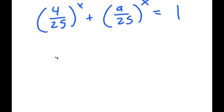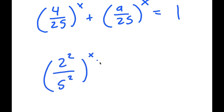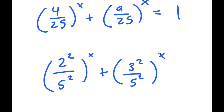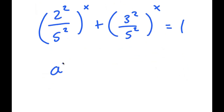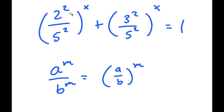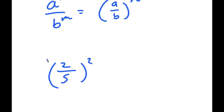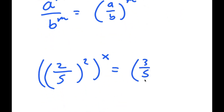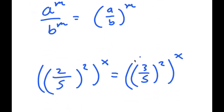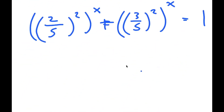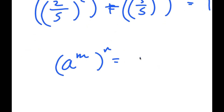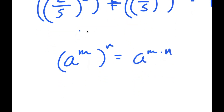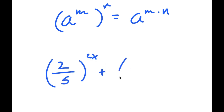From here, I can rewrite 4 over 25 as 2 squared over 5 squared, and 9 over 25 as 3 squared over 5 squared. If I have something in the form a to the power of m over b to the power of m, this is equal to a over b to the power of m. So 2 squared over 5 squared turns into 2 over 5 squared, and 3 squared over 5 squared turns into 3 over 5 squared. Then using the rule that a to the power of m to the power of n equals a to the power of m times n, the 2 and x multiply, giving 2 over 5 to the power of 2x plus 3 over 5 to the power of 2x is equal to 1.